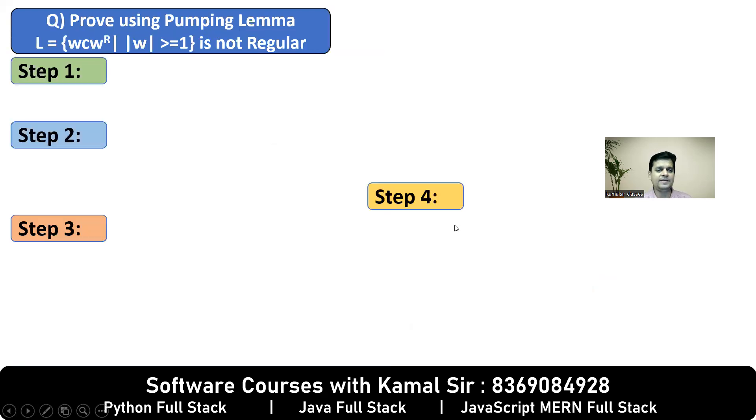To understand this, let's take an example. Prove using pumping lemma WCWR is not regular. Step number one, assumption: yes, L is regular. We do proof by contradiction.